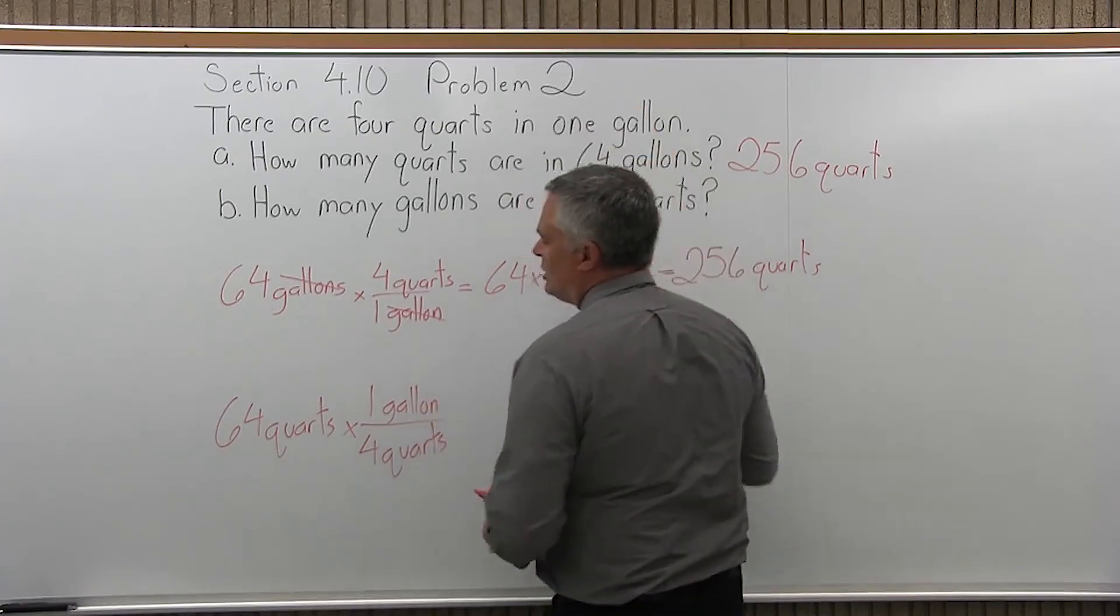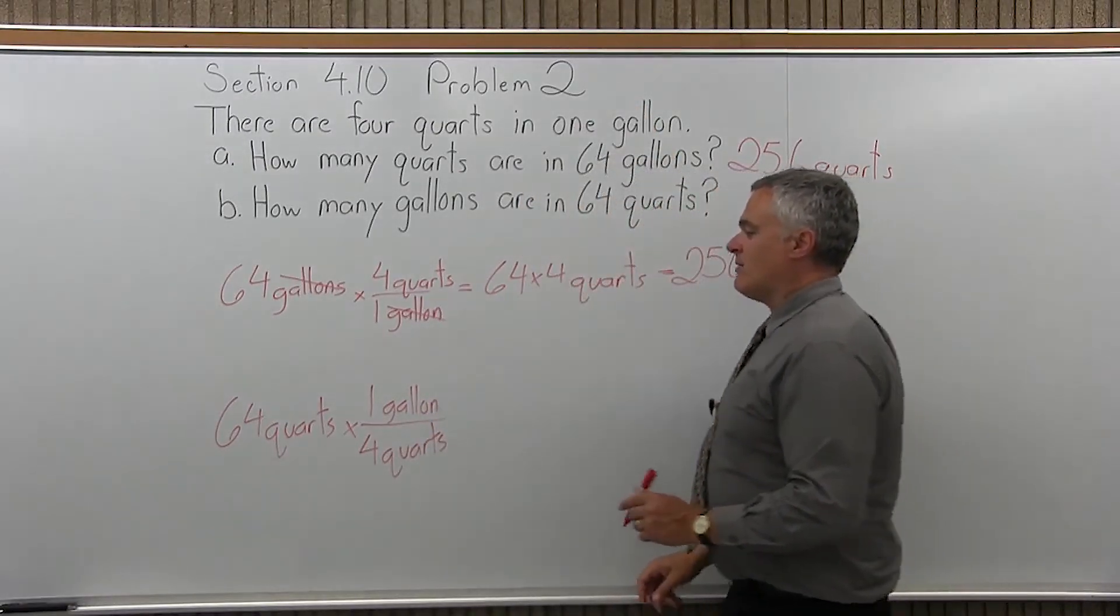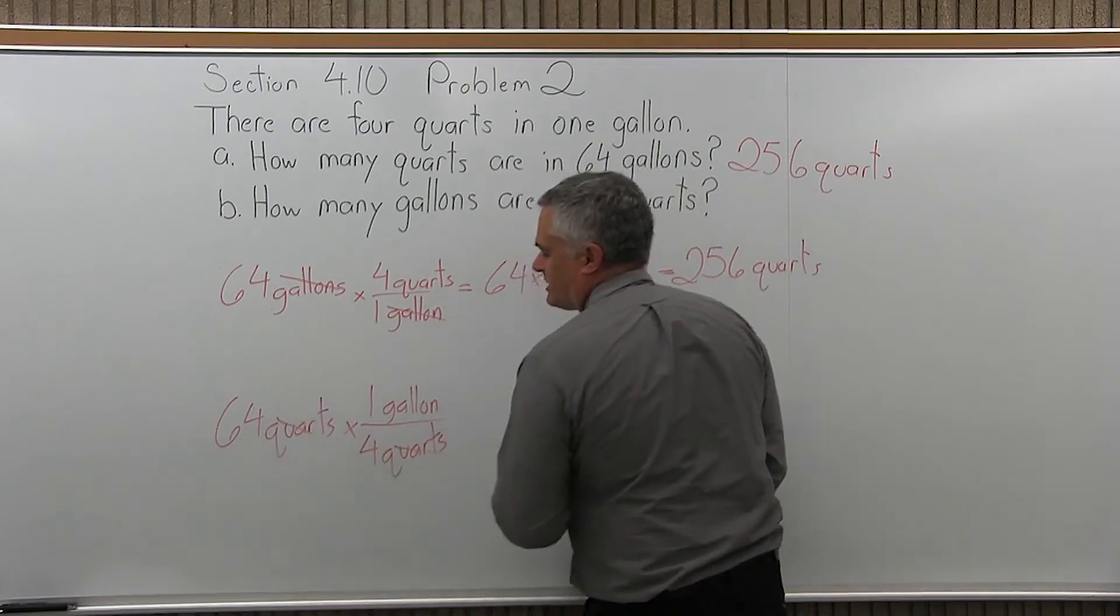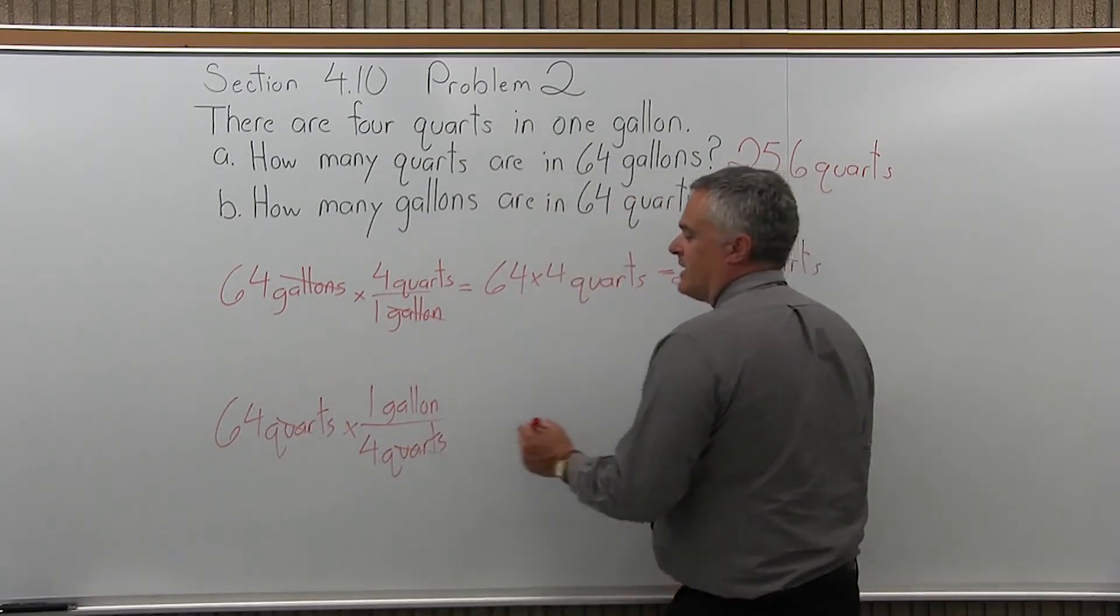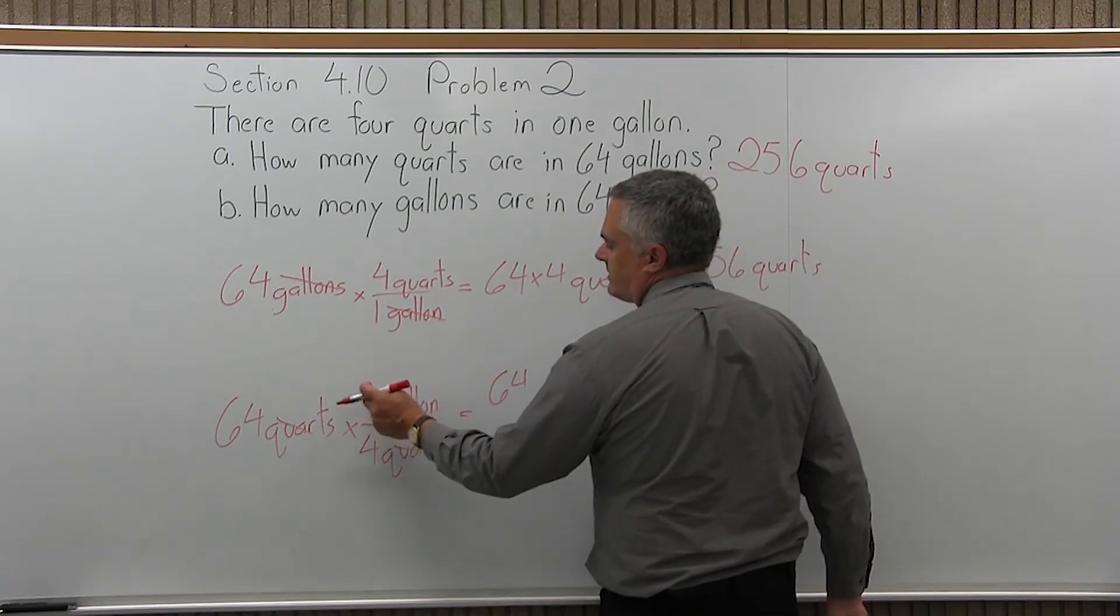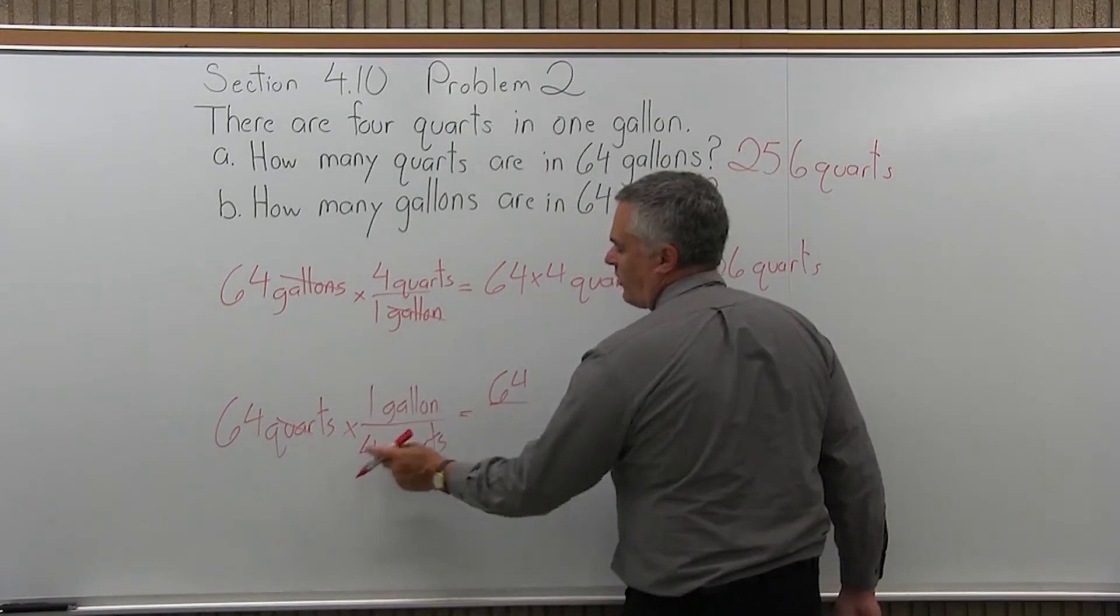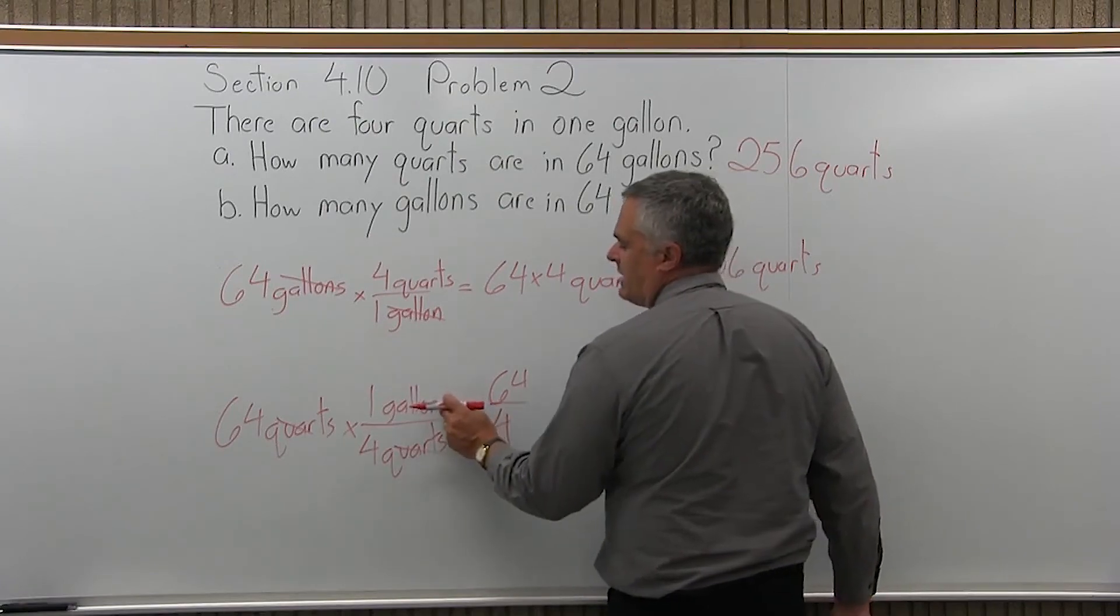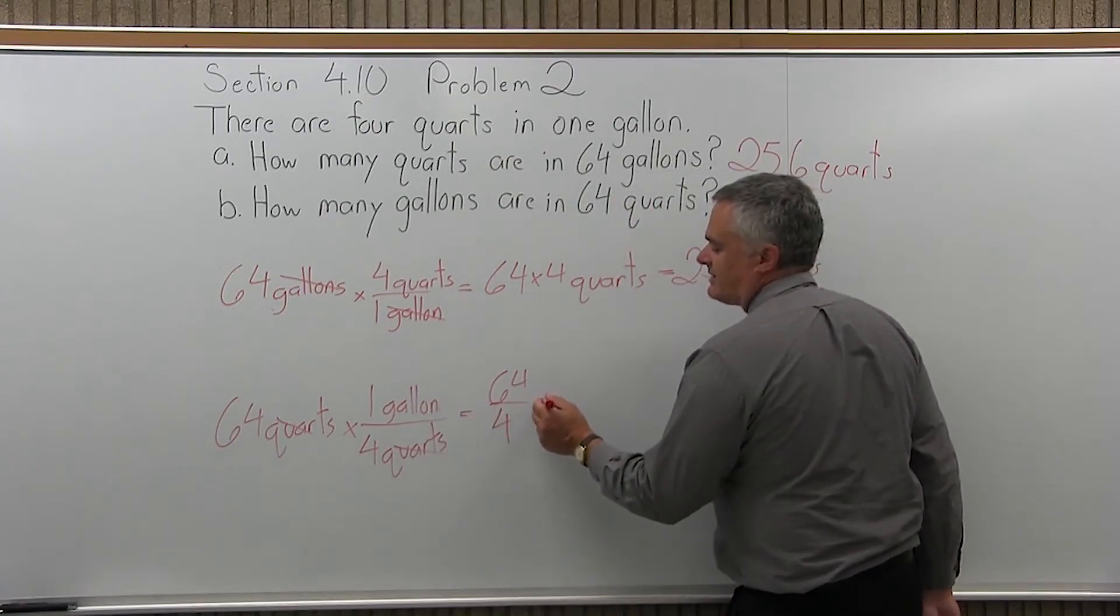We can make it singular. So now, quarts in the numerator, quarts in the denominator, that will cancel. And what I'm left with is 64 in the numerator. The times one I don't really need, but I have a 4 in the denominator. And the units that remain are gallons.